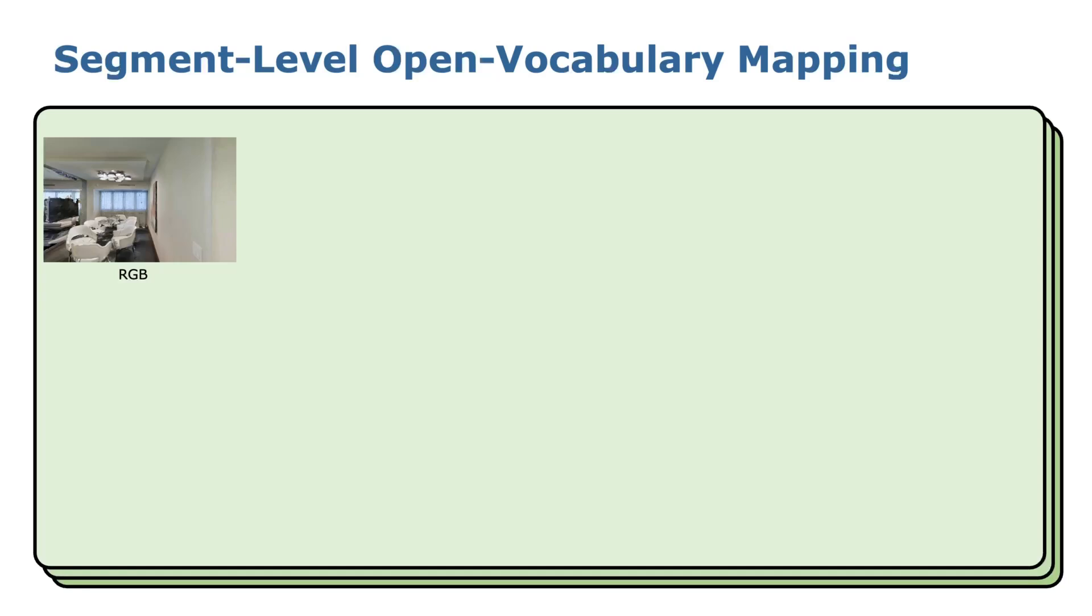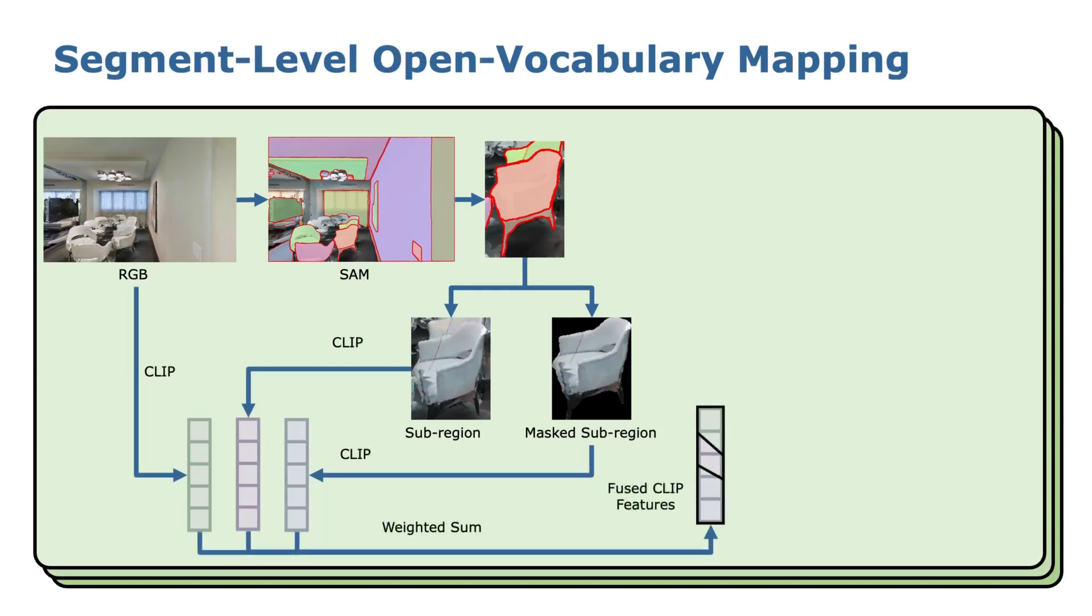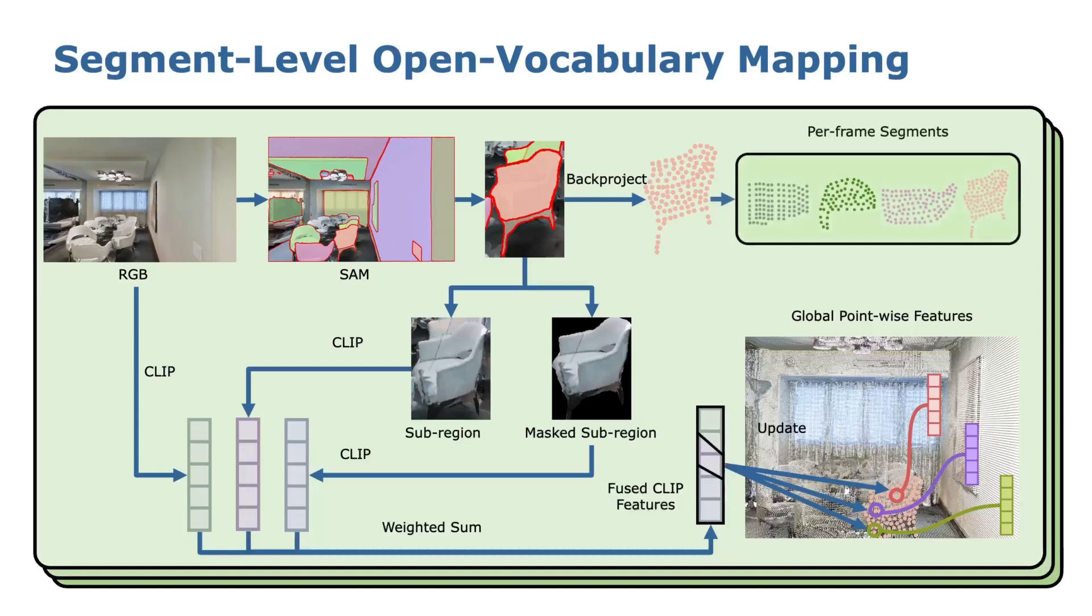The pipeline assumes the consumption of RGBD sequences with odometry. For each RGB image, we run SAM to get class-agnostic masks. For each mask, we encode the global image, the sub-region image, and its masked version to obtain three CLIP features, which are fused with weighted sum and used to update the global point-wise features. Meanwhile, we back-project the mask, creating a list of per-frame segments.